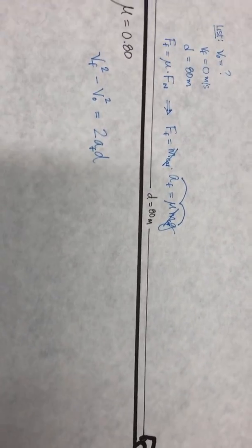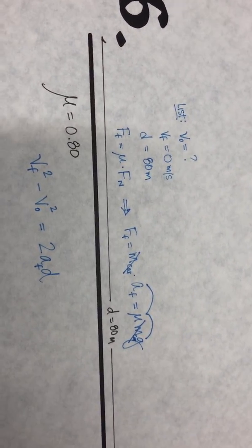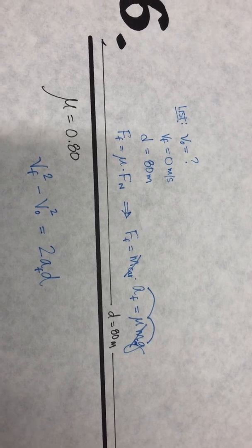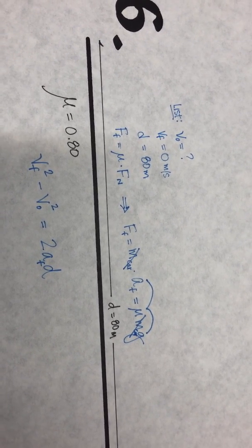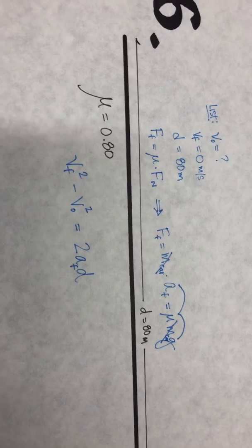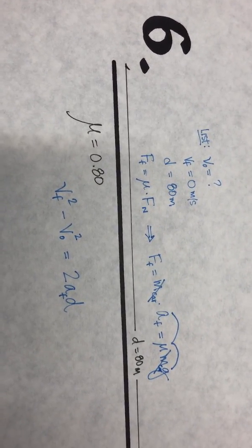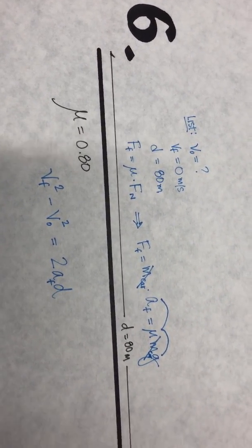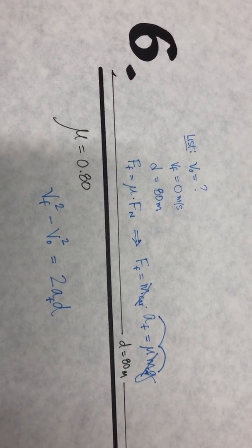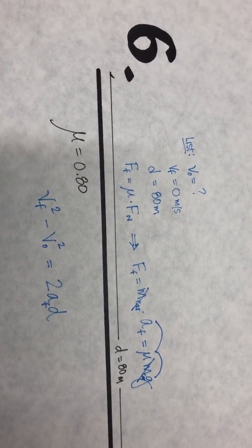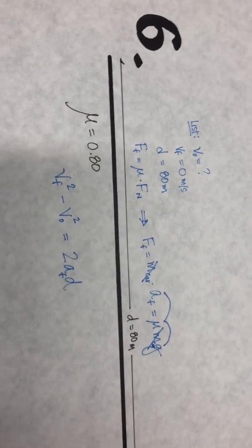Problem number six: a car. Police lieutenants examined the scene of an accident where a vehicle came nearly to a stop before colliding with another. The skid marks left by the vehicle are 80 meters long, and the coefficient of friction between the tires and the road is 0.8. What is the original speed of the vehicle? Assume a level road.